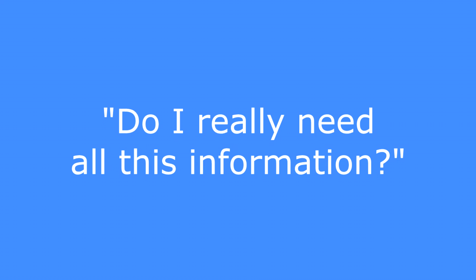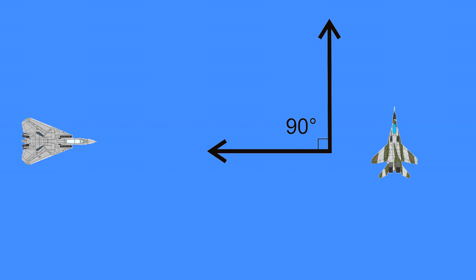Now, you may be wondering: do I really need all this information to learn the radar? And my answer is yes — this information is invaluable, as you need it to understand this next concept: the notch. Remember how a target flying your same speed and heading would not give a radar return? The same thing can be replicated with the use of a notch, which is when a target out in front of you enters a near or perfect perpendicular flight path to your aircraft. The closer to 90 degrees they are, the better.